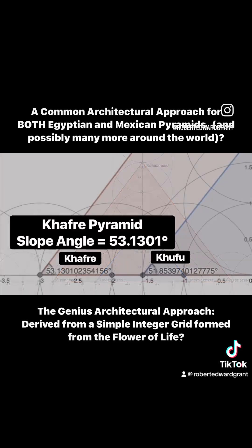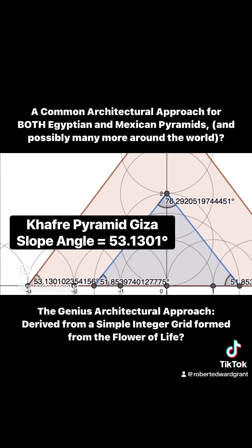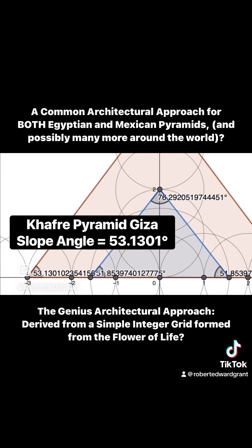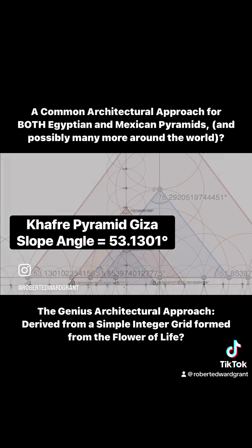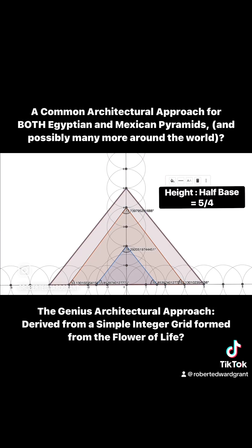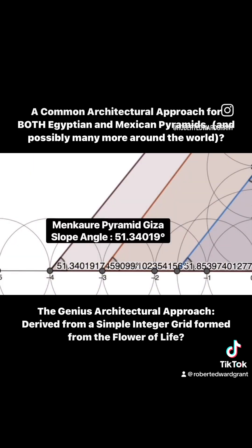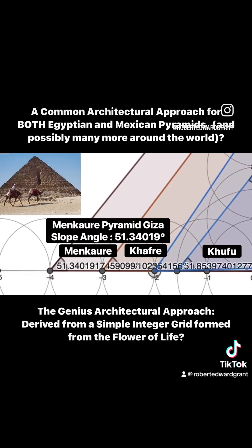So now we have Khufu and Khafre, two of the pyramids on the Giza Plateau, explaining why they have the slope angles that they have, following a simple grid. Let's take this to the next level and see if we can find other pyramids that might match this exact same pattern, like the Menkaure Pyramid. Menkaure would then take the position of five over four, yielding a degree angle of 51.34019 degrees — famously the slope angle of the Menkaure Pyramid — and this grid pattern yields us the exact same result.